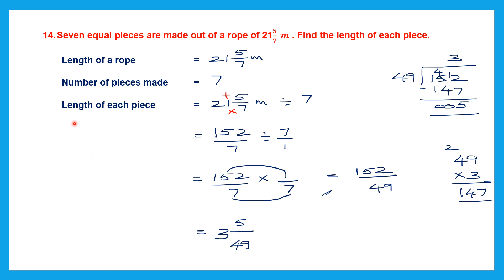We have found the length of each piece. Since it is length we use the unit given in the question — meters. So the answer is 3 and 5 by 49 meters. With this, children, we come to the end of this exercise. Thank you children.